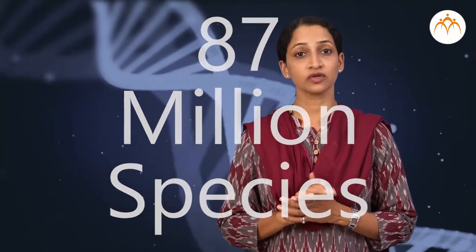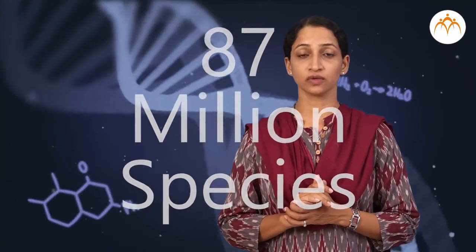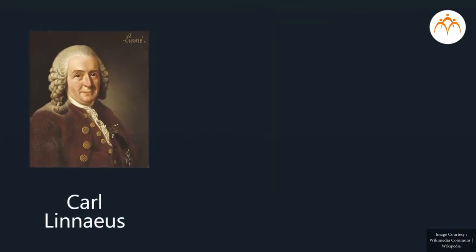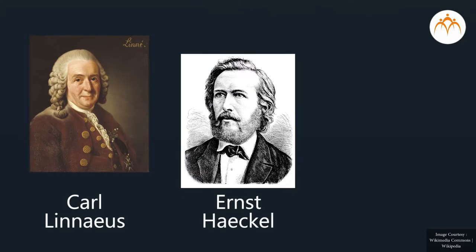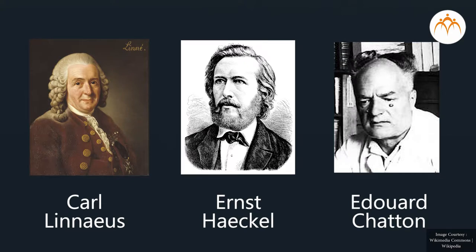Students, it is estimated that there are around 87 million species of organisms on earth. For their systematic study, their classification is necessary. In the past, scientists like Carl Linnaeus, Haeckel, and Chaton tried to classify organisms.